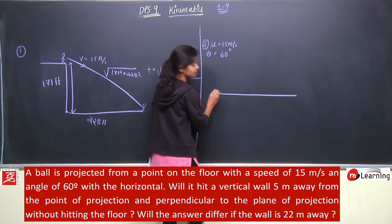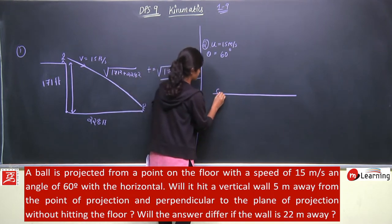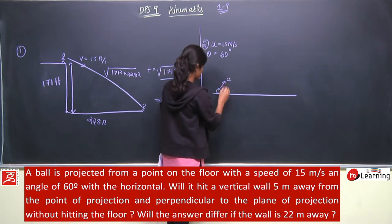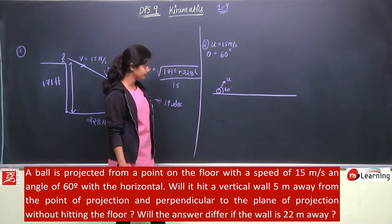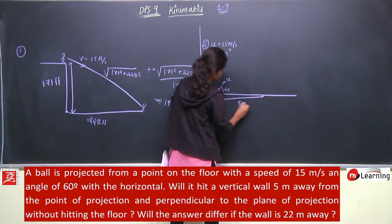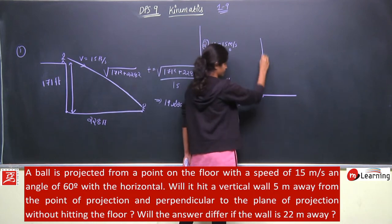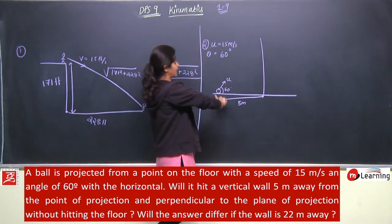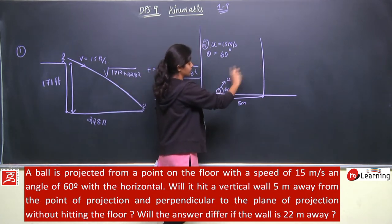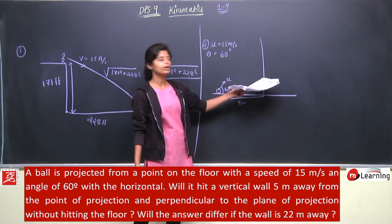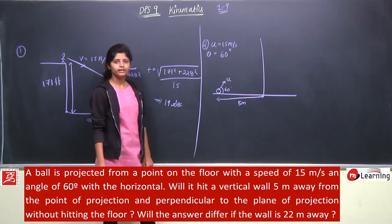Is point se ball ko project kia ja ra hai with initial speed of 15 meter per second at an angle 60 degree with the horizontal. Yahaan se 5 meter ki duri pe, 5 meter ke distance pe, ek wall hai. Question mein yeh pooch rahi ki kya ye ball before hitting the ground, before hitting the floor, kya ye wall is wall ko hit karega?